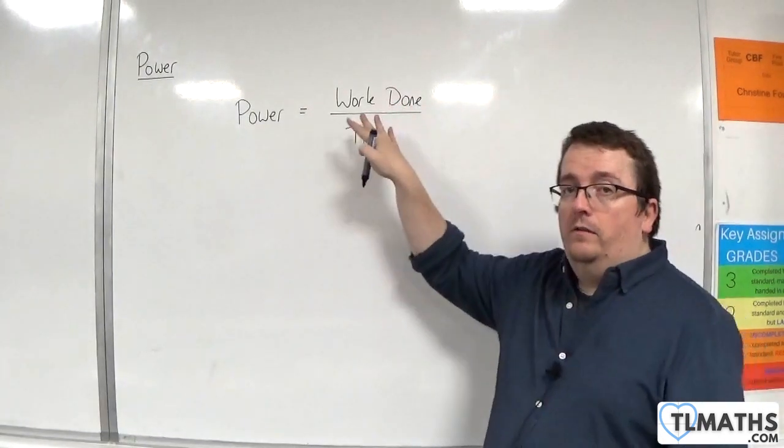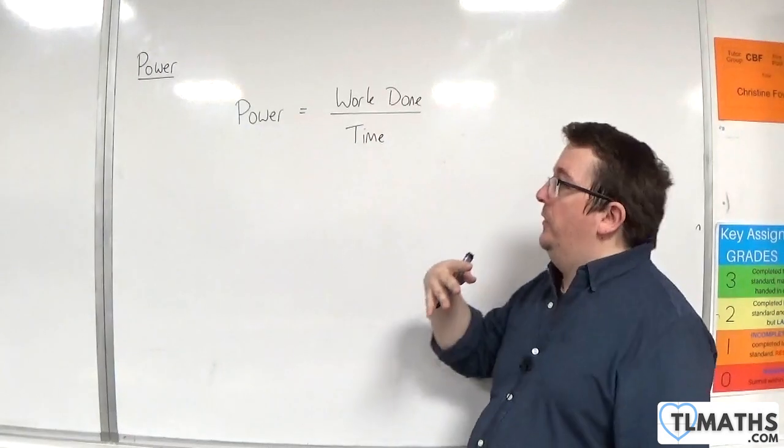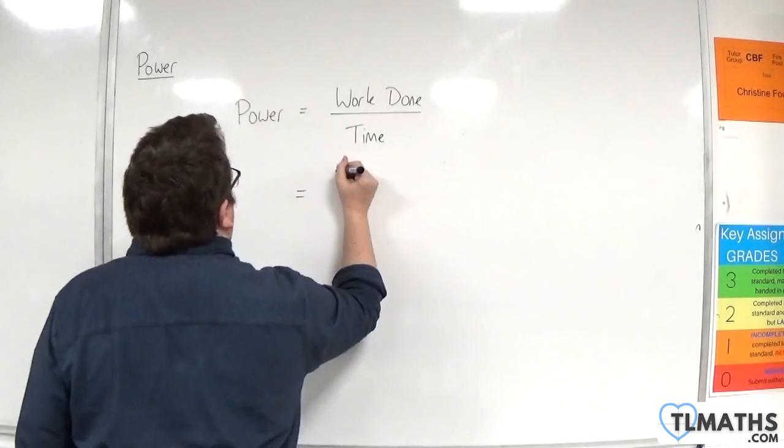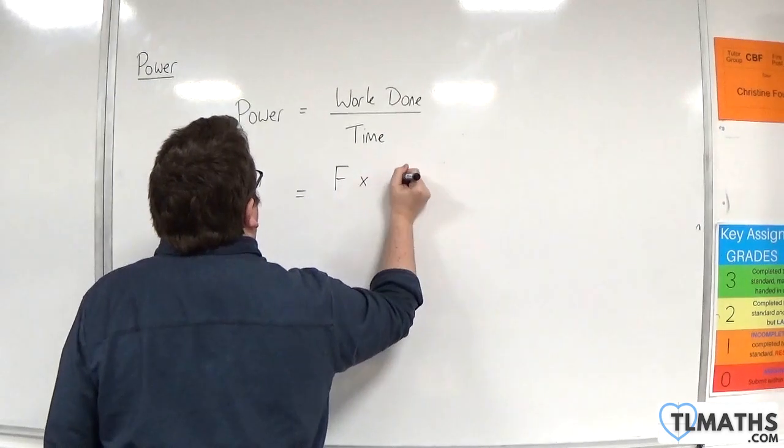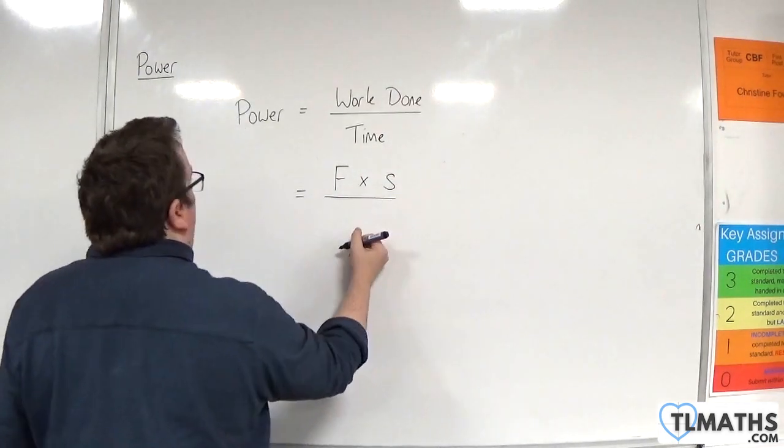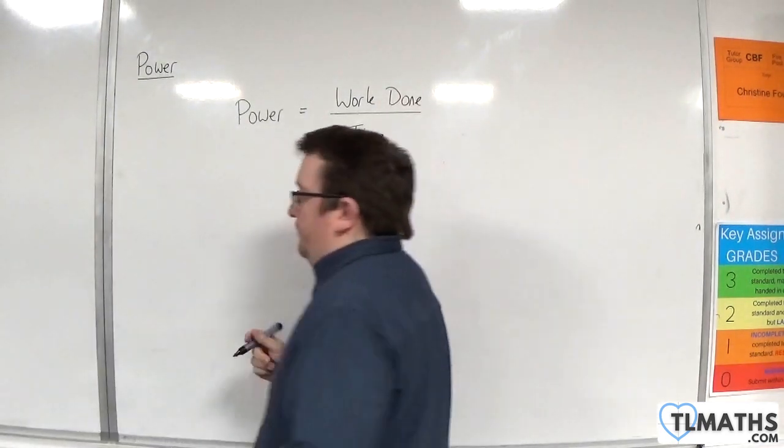Now, work done was force times distance. So, we can write that as force times the distance, S, over time, T.